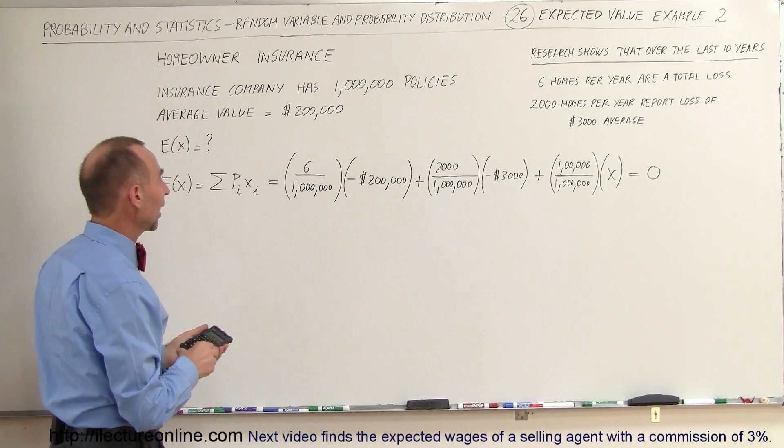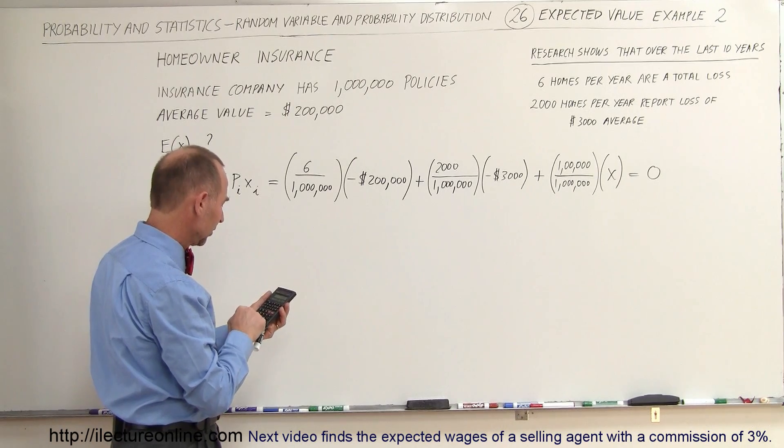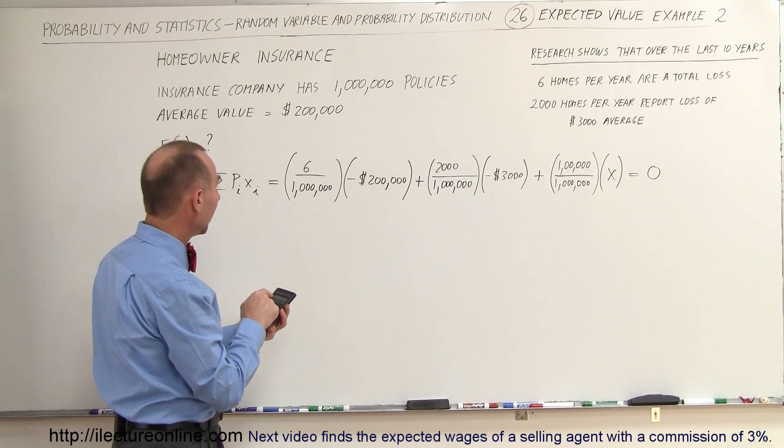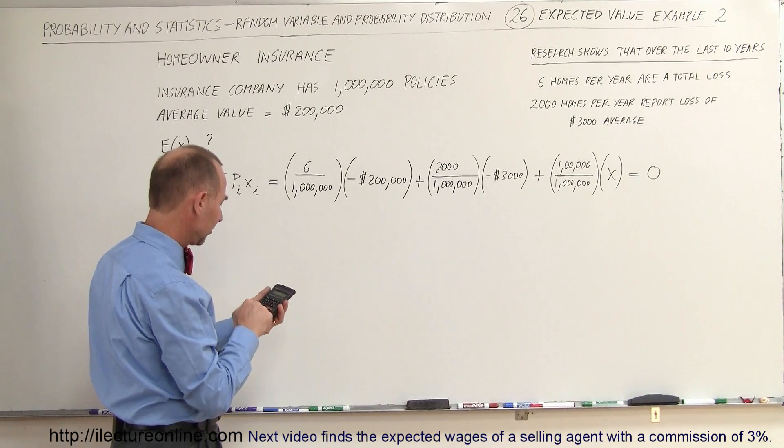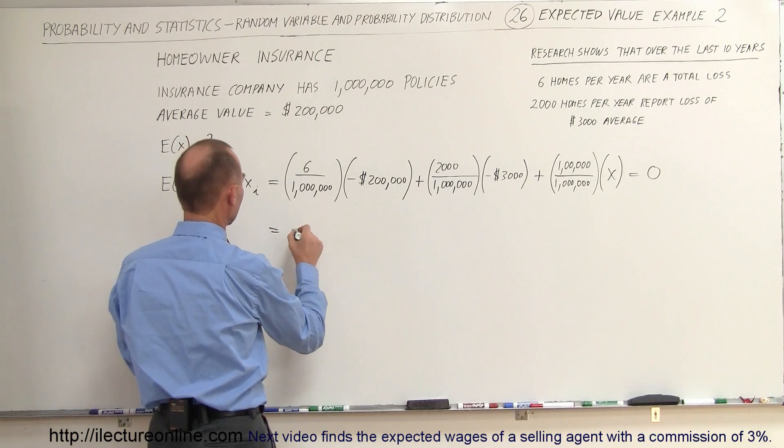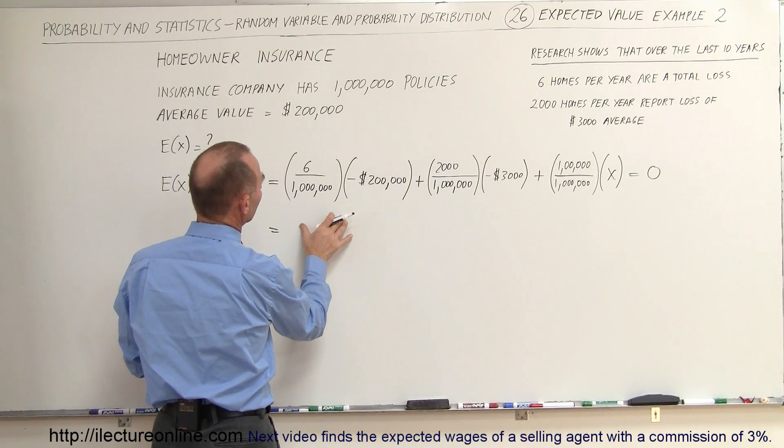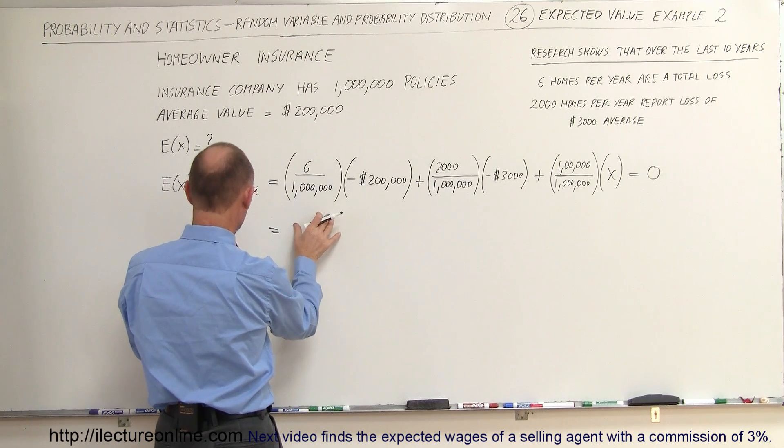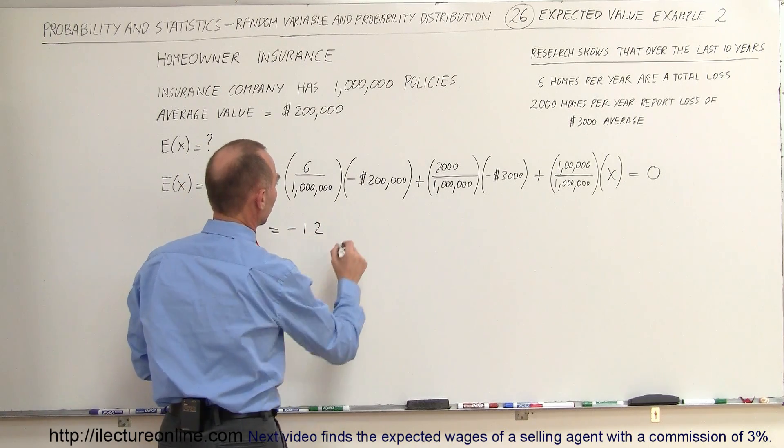All right, let's figure this out. So here we have $200,000 divided by $1 million, so that's basically 0.2 times 6. That would be 1.2 million divided by 1, so that would be minus 1.2.